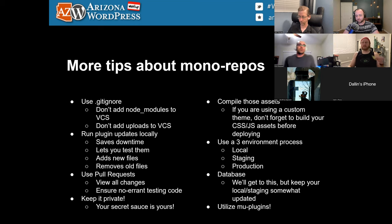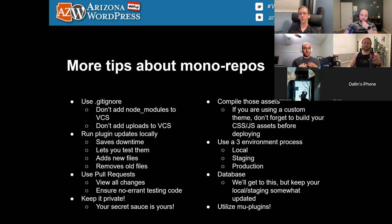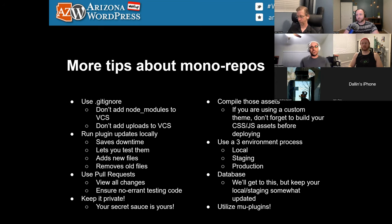With a mono repo, you can run plugin updates locally — check out the site, hit update on all plugins, and rather than just reading changelogs, you can go to git diff and submit a pull request that shows exactly what every plugin changed. For store owners with highly customized sites, you can see what every single plugin changed at the file level — not just a changelog. That lets you identify much more easily if they changed something you were depending on.